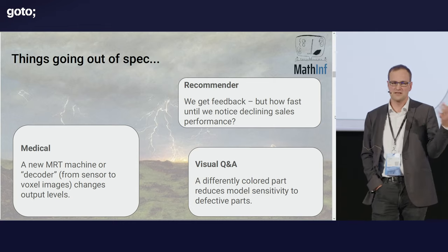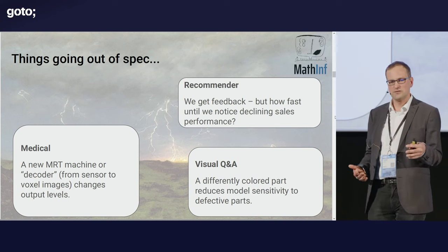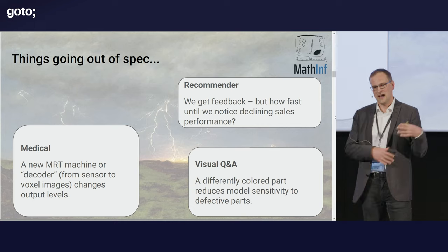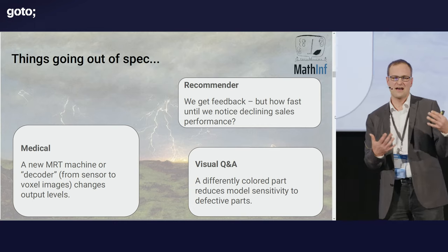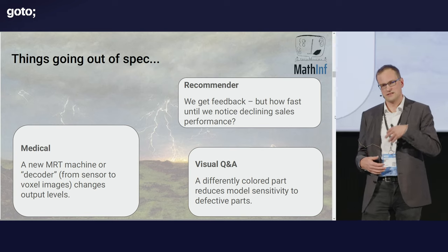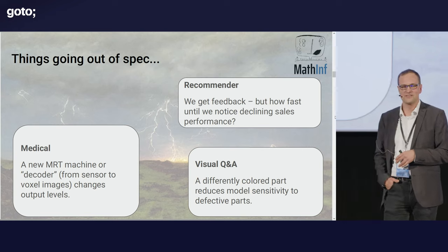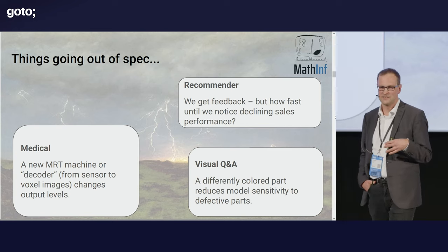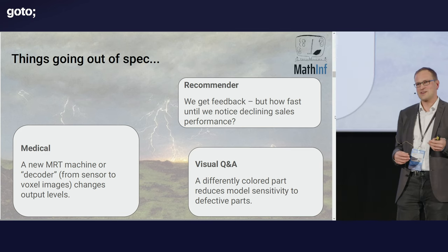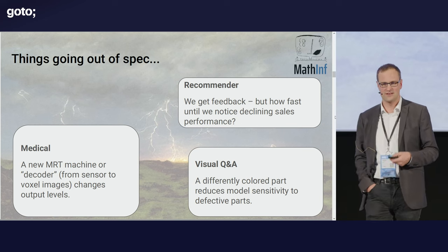In medical devices, for example, some things are not as normed as they should be. In MRT machines, you might suddenly have different output levels or a different output range from having a different device, and so you want to detect that — our inputs are not quite what we expect them to be. Similarly in recommender systems, you don't want to wait until you notice the declining sales performance. As Holly said this morning, when accounting catches up to us, it's too late. And in visual QA, maybe something hit the camera or it's dirty, and now it doesn't spot any defects — but they might be there and we might be missing them.